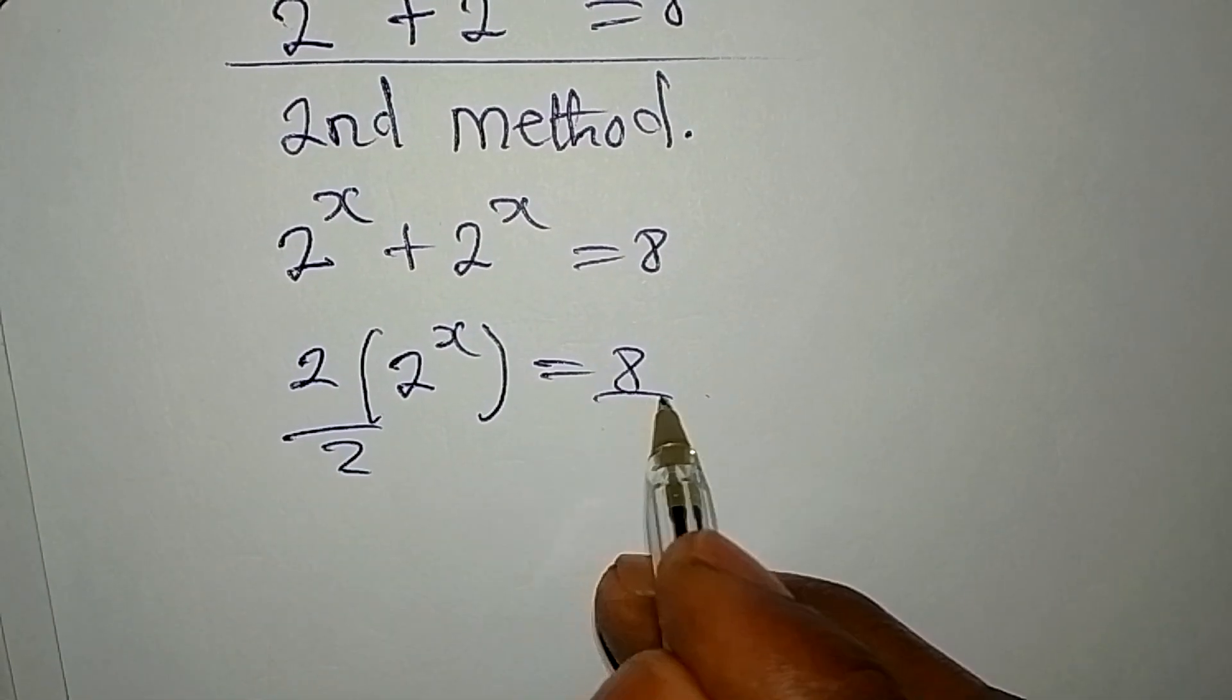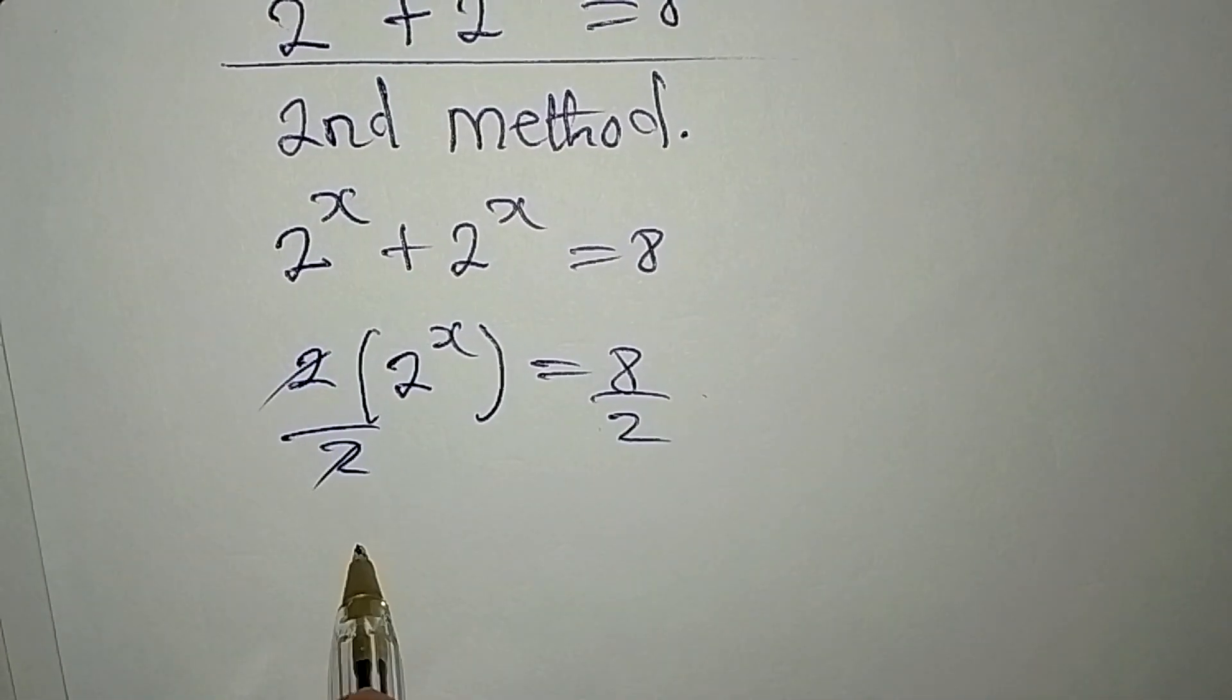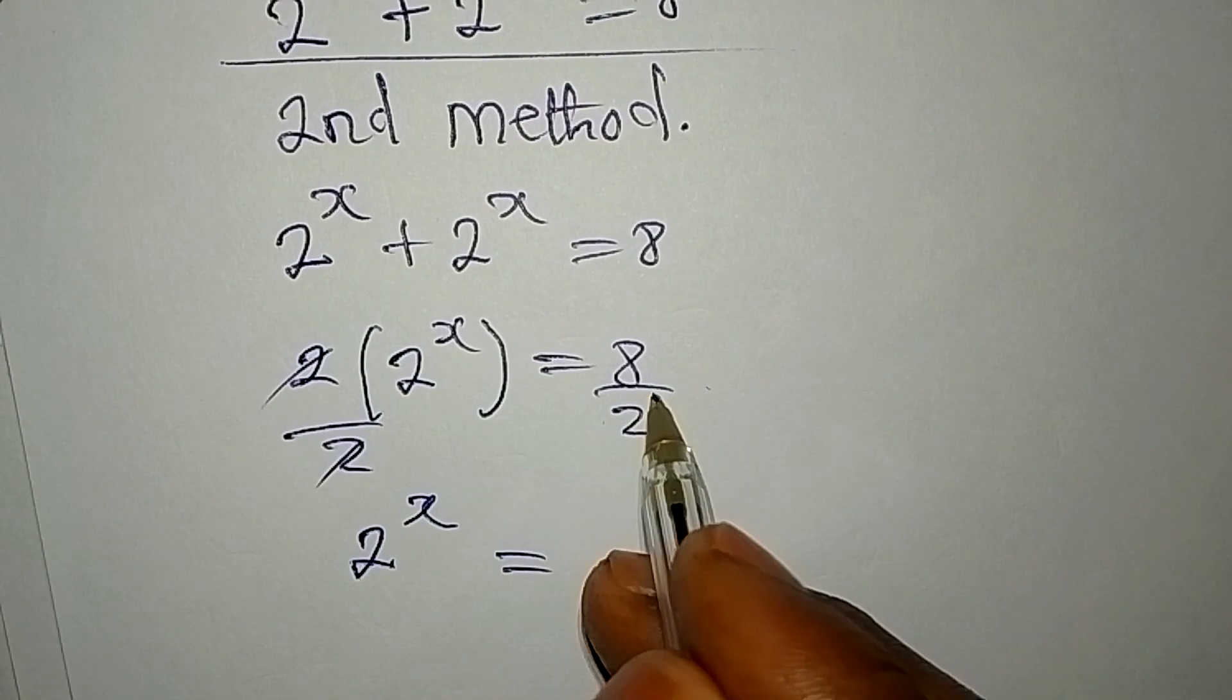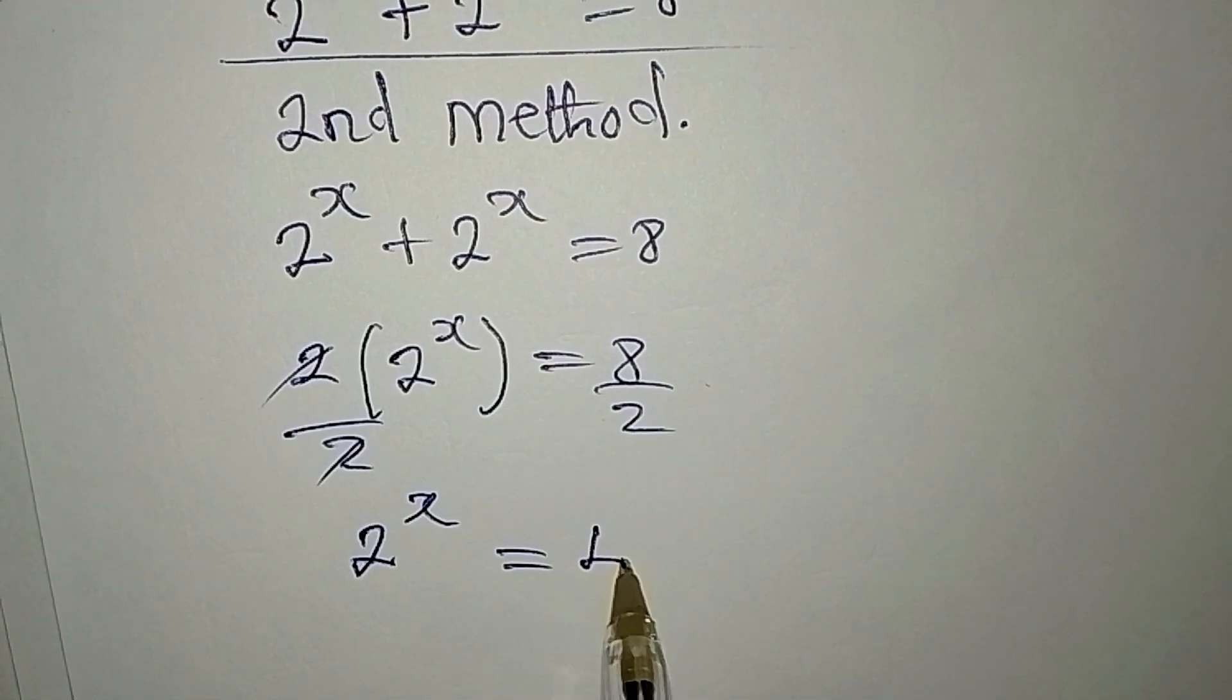Divide by 2, divide by 2. This will cancel and 2 to the power of x is equal to 8 divided by 2, and that is 4.